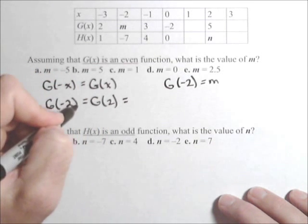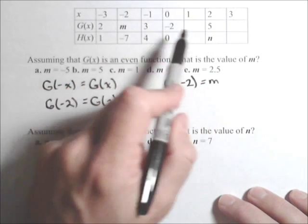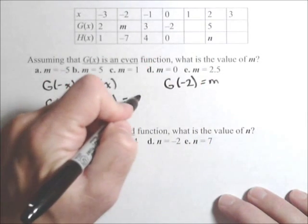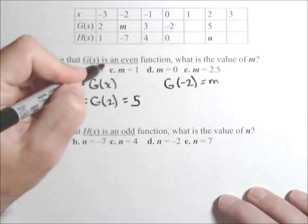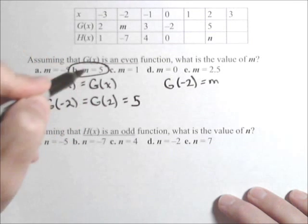So, m is equal to g of negative two, which is equal to g of two, which, according to our table, is equal to five. And so, m should be five.